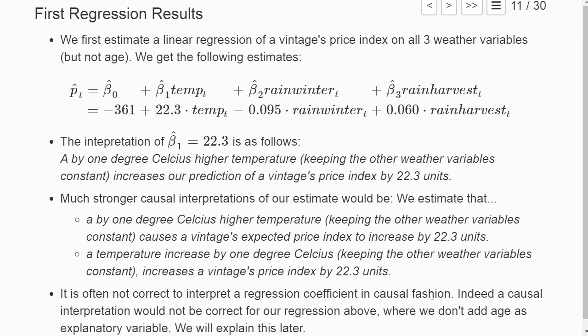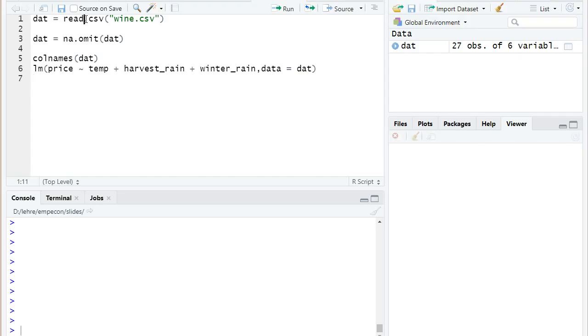We also see that it's a bit problematic here if we don't add age as an explanatory variable. And that's what we actually will do now. We will add age as an explanatory variable because that's what Ashenfelter and his co-authors did in their regression.